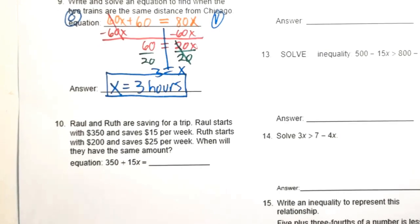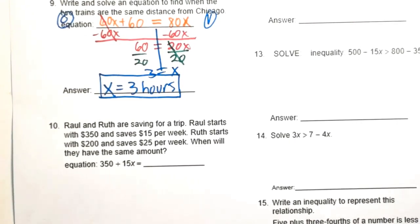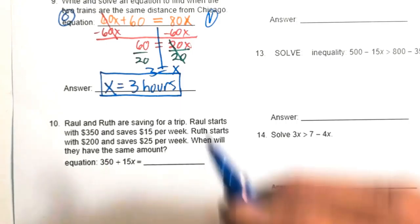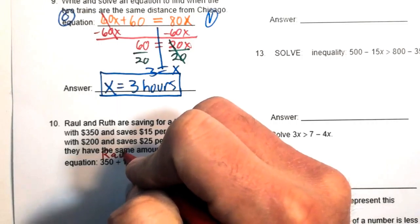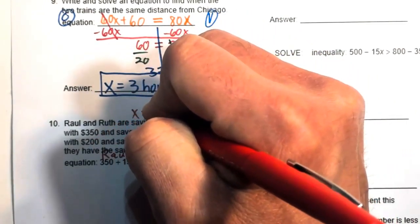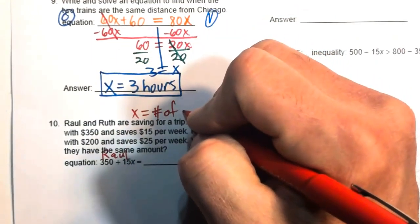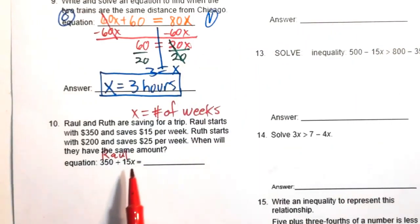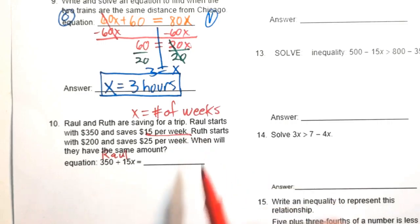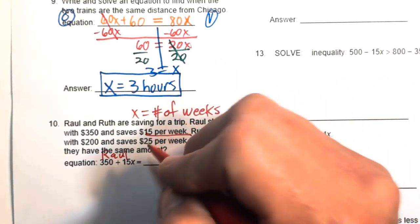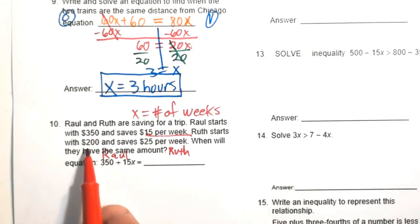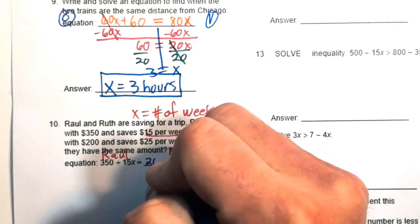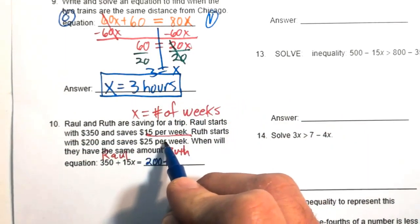Number ten: Raul and Ruth are saving for a trip. Raul starts with $350 and saves $15 per week. The equation shows Raul represented as 15x plus 350, where x is the number of weeks. On the other side, Ruth already has $200 and saves $25 per week, so her expression is 200 plus 25x.